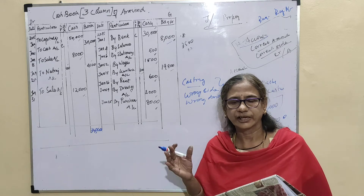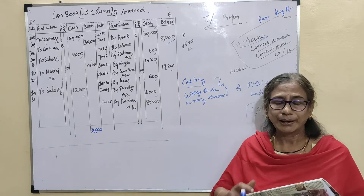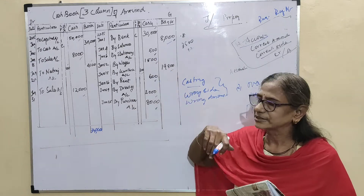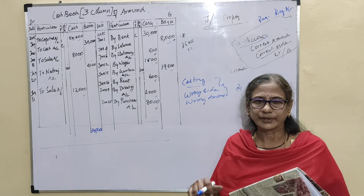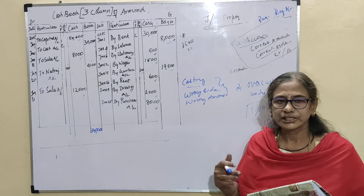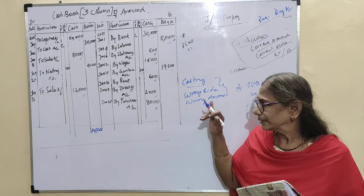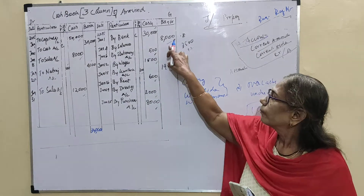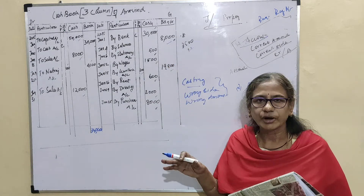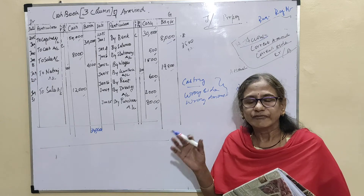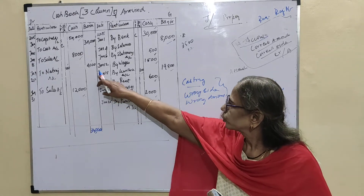There are errors of complete omission and error of commission. Under error of omission, complete omission means not entering the journal proper for a car used by the business — that is capital of the owner. Entering the wrong amount in the original book of entries — these errors of omission will not be identified in the trial balance. And here also a totalling error.